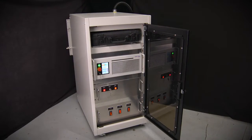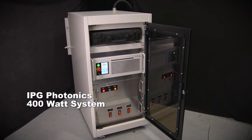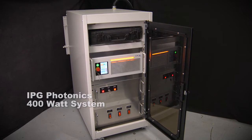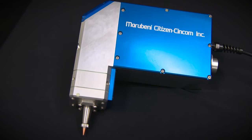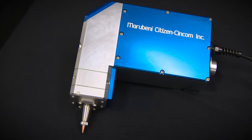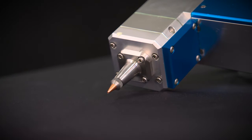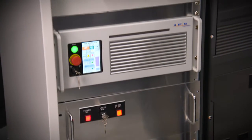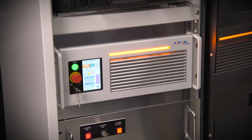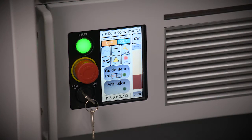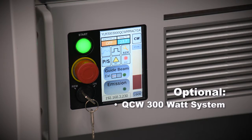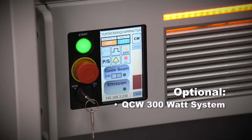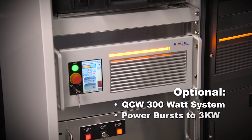The L2000 utilizes the IPG Photonics 400 watt laser unit. IPG is the world leader in providing fiber optic lasers and is fully supported in the US. Additional power units are available that address specific application requirements. One option is a QCW quasi continuous wave 300 watt system that can provide power bursts to 3 kilowatts for extra power when needed.